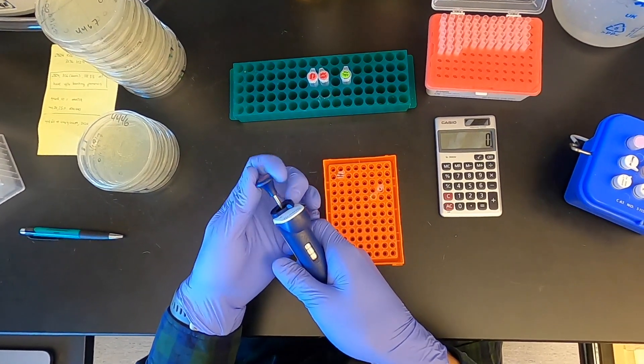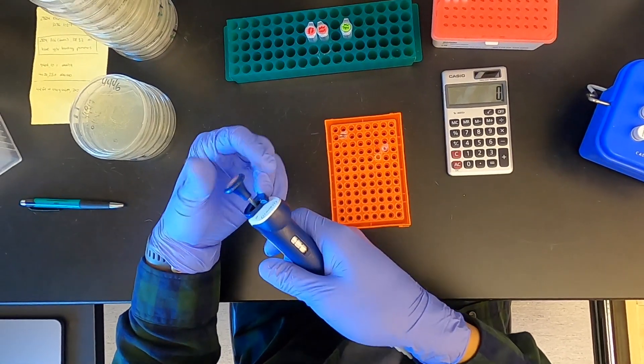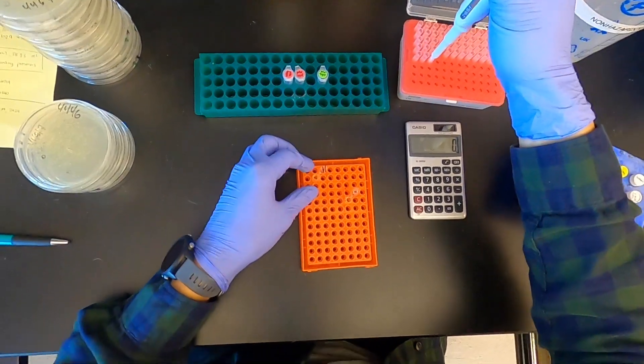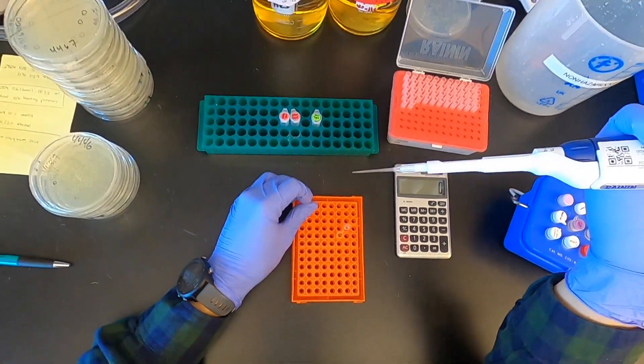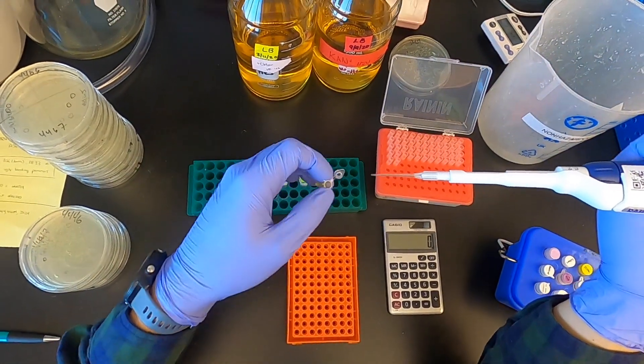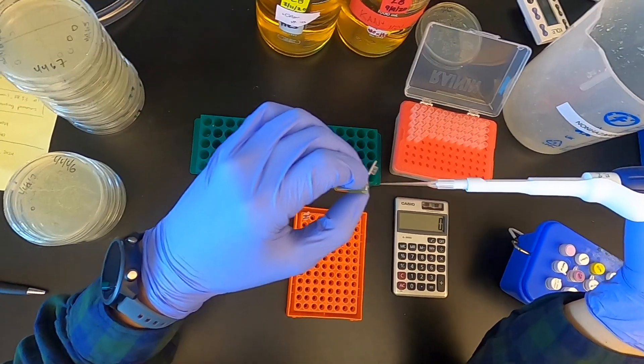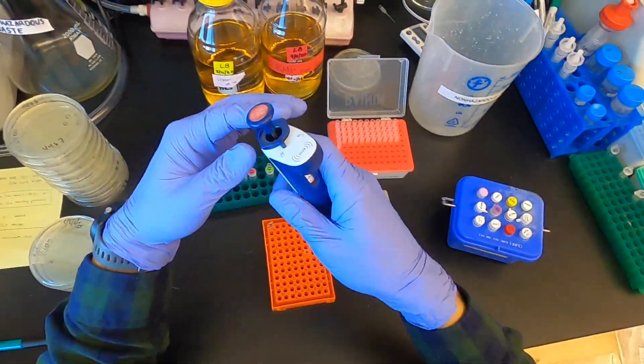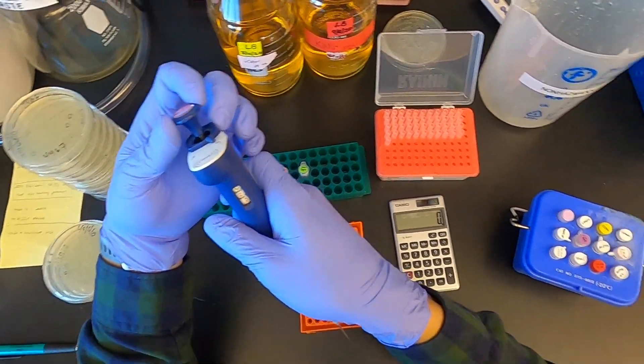Next I'll add my ligase buffer, 0.5 microliters. When I'm pipetting these small volumes, I always visually confirm to make sure that the correct amount of liquid is in the tip, and then I also visually confirm to make sure that liquid has been expelled from the tip. You'll see that this becomes more important for really viscous things like enzymes.